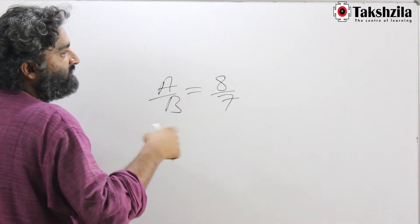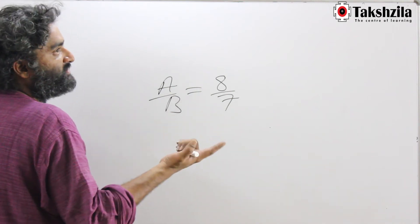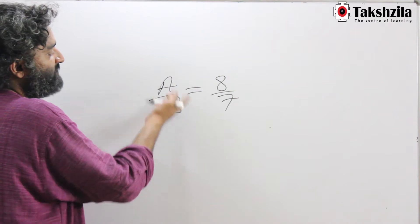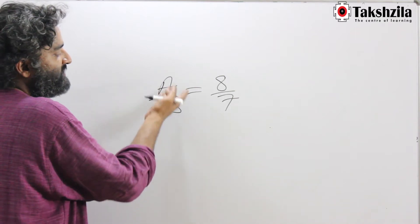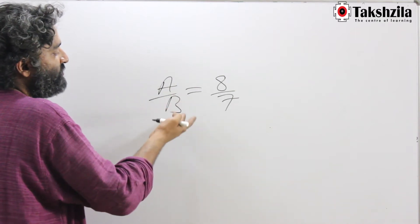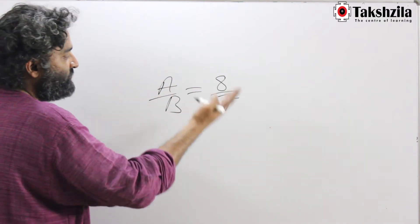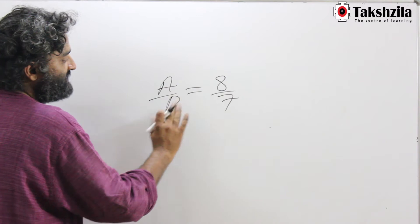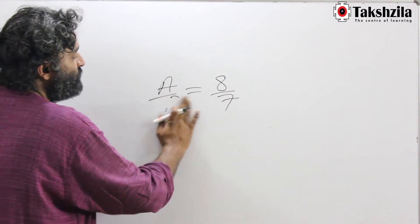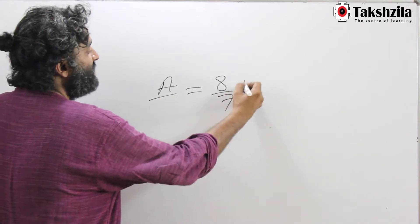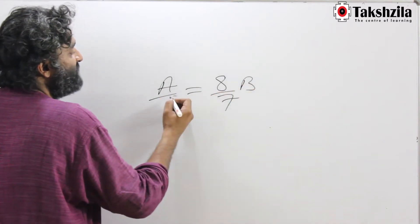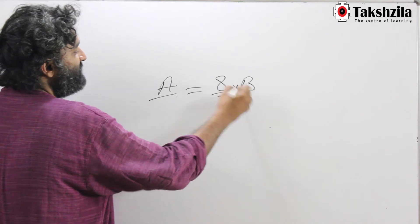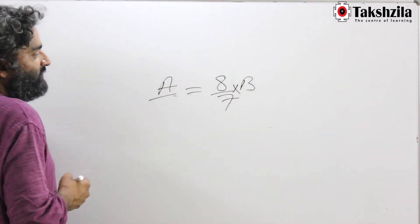Whenever you want percentage information, you should just put the numbers in a numerator by denominator form and we will get the rest out of it. So if I move the B here, this becomes A is equal to 8 by 7 into B.